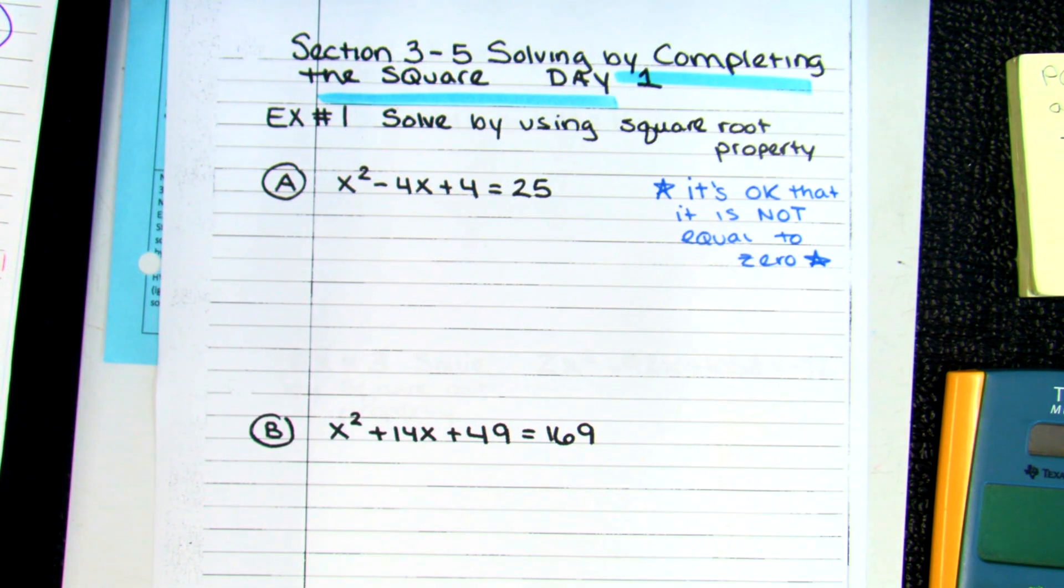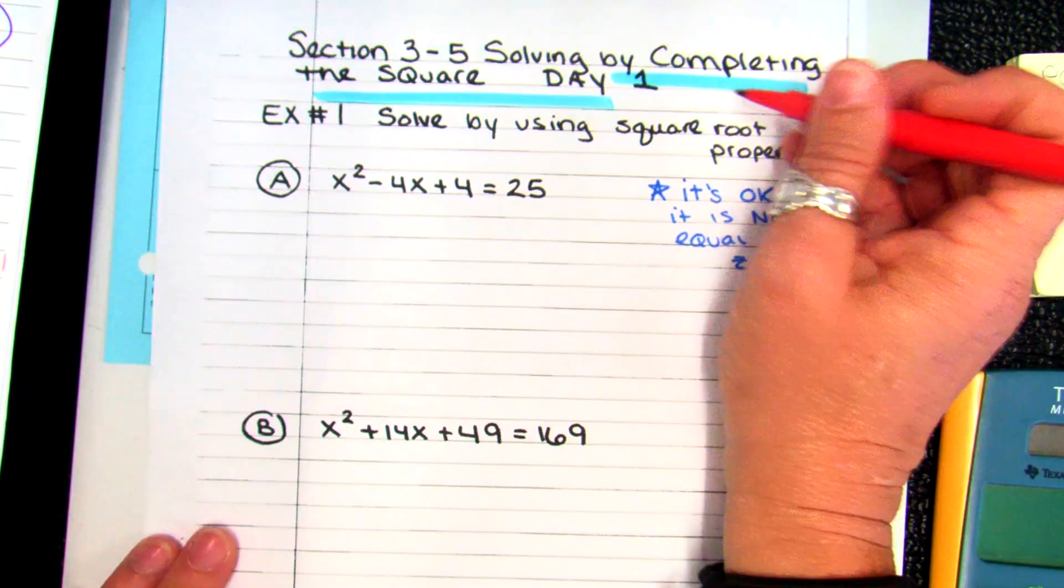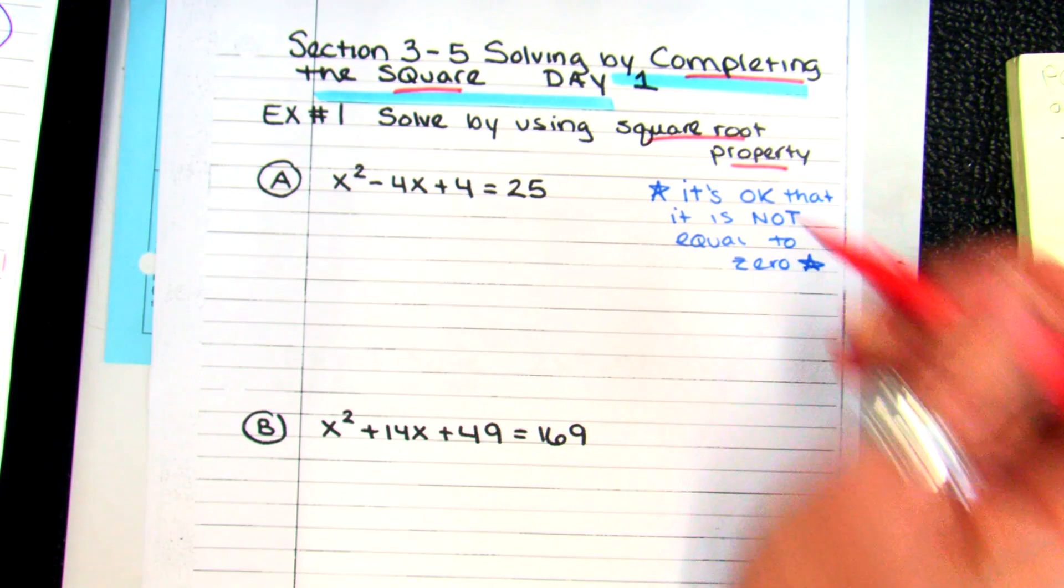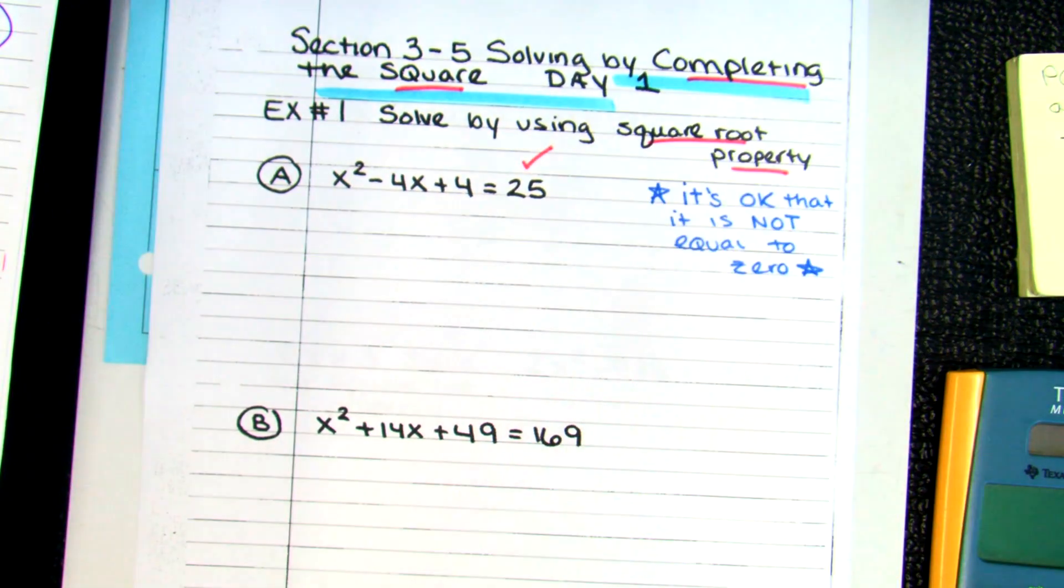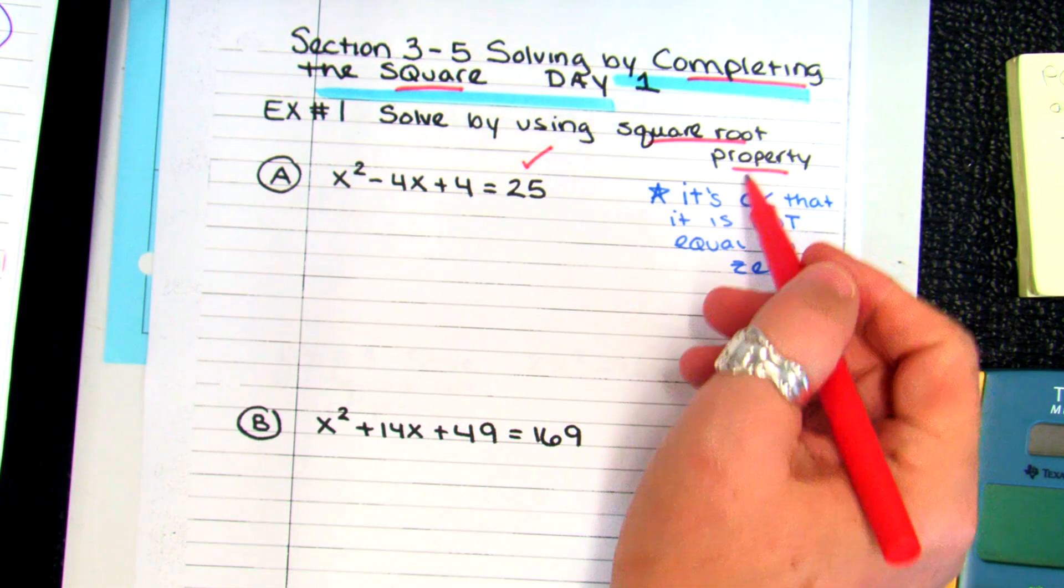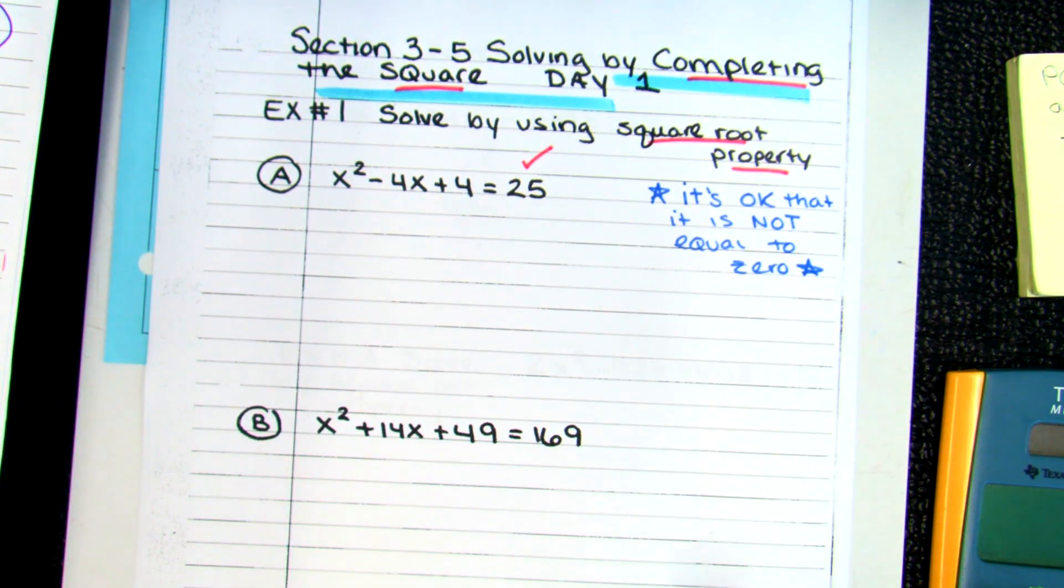Make sure you know how to factor. It was GCF factoring, there was trinomials, two different types, and there was binomials, difference of squares. Now in factoring, what do the equations have to always be equal to? Zero. But when we go to completing the square or solving by square root method, it's okay that this is not a zero. If I'm going to use the square root method, I can just leave it the way it is. It's actually ready to go.